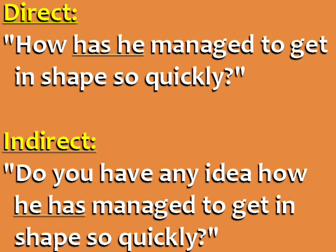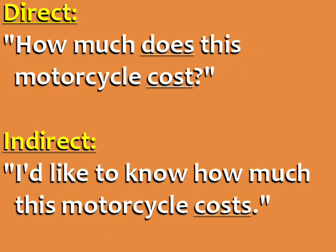Direct: 'How has he managed to get in shape so quickly?' Indirect: 'Do you have any idea how he has managed to get in shape so quickly?' The verbs have, has, and had also come after the subject in indirect questions. Direct: 'How much does this motorcycle cost?' Indirect: 'I'd like to know how much this motorcycle costs.' To form the indirect question, we eliminate the auxiliary verb 'does' and change 'cost' to 'costs.'